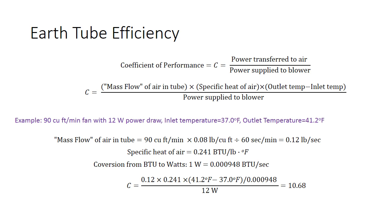The power transferred to the air is simply the mass flow of the air that's in the tube, so how many pounds of air are being moved through the tube over a given length of time. The specific heat of air, which measures the amount of heat required to heat a given mass of air, a pound of air, one degree. Then you multiply it by the outlet temperature minus the inlet temperature.